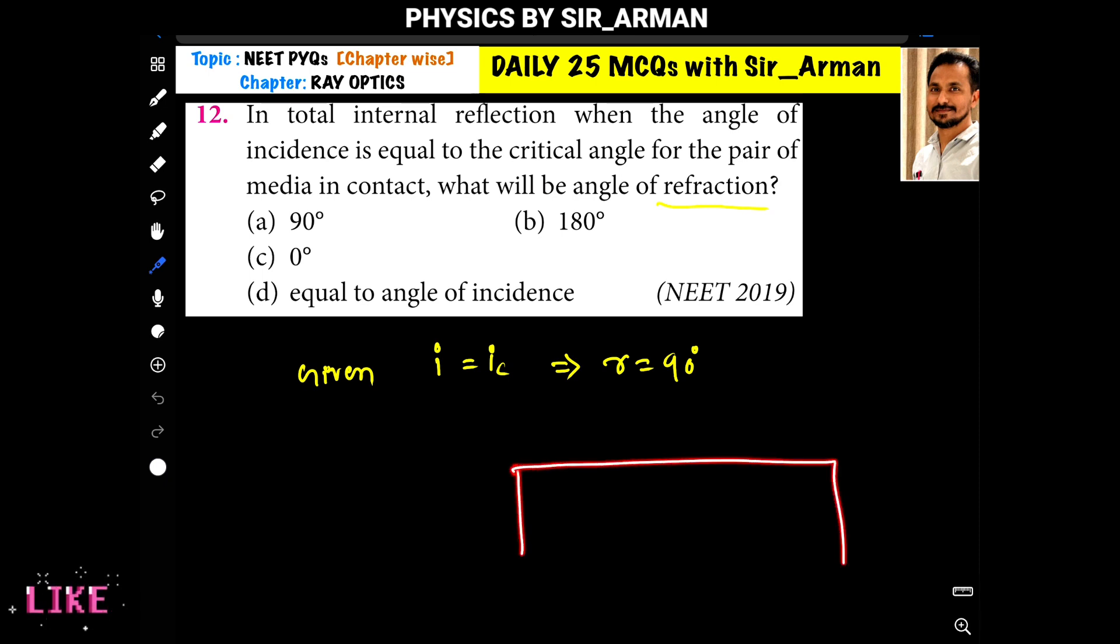Now, we know that if a ray is passing from a denser medium to a rarer medium, it will bend such that the refracted ray moves parallel to the surface. That is, the angle of refraction becomes 90 degrees.